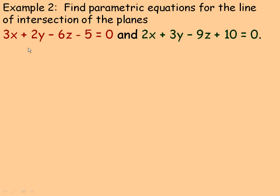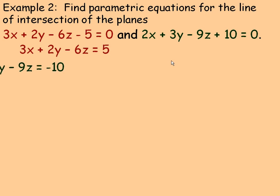Now we'll look at examples of how two planes can intersect and how we find their intersection. Since 3, 2, negative 6 is not a multiple of 2, 3, negative 9, these two normals are not multiples, so the two planes must intersect in a line. We'll find parametric equations for that line of intersection using the method of elimination.